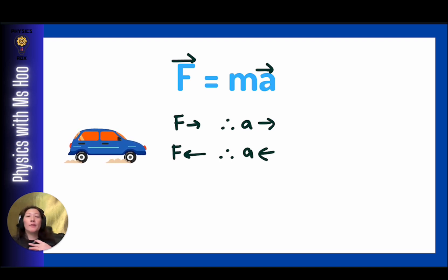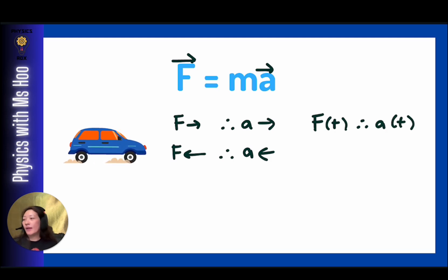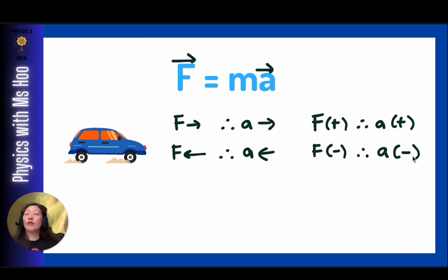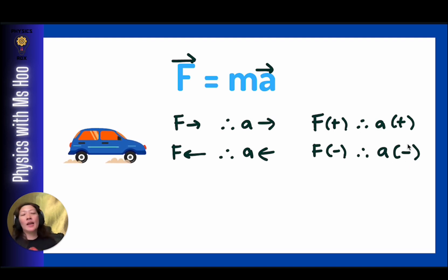When putting directions into the equation, we use positive and negative signs. If F has a positive value, the acceleration is positive. If F is negative, the acceleration is negative — which could mean accelerating in the opposite direction or deceleration. To understand more about negative acceleration, please watch my video on acceleration.